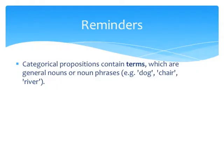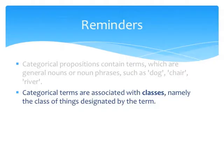Let's begin with a quick review of some important notions. First, we know that categorical propositions contain terms, which are general nouns or noun phrases. For instance, you have dog, chair, river, book — but not adjectives. We also know that categorical terms are associated with classes, that is, the class of things designated by the term. So in the case of dog, the class of dogs.